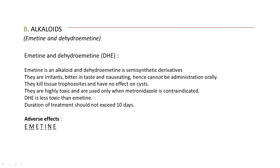The next class of tissue amoebicide is alkaloids. Under alkaloids there are two drugs: emetine, which is a natural alkaloid, and dehydroemetine, which is a synthetic derivative. Both kill tissue trophozoites and have no effect on the cyst form. They are highly toxic tissue amoebicides and are used only when metronidazole is contraindicated. Dehydroemetine is less toxic than emetine. The duration of treatment for these alkaloids should not exceed 10 days.